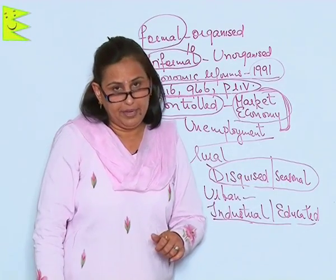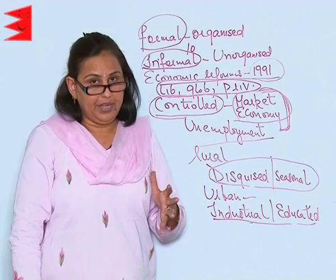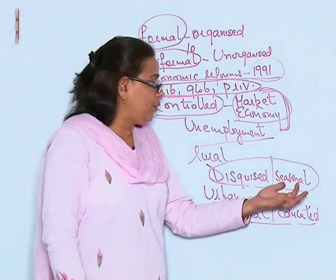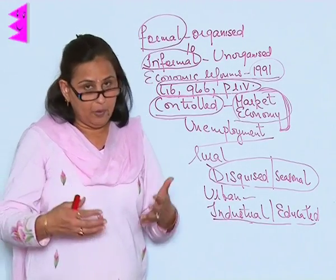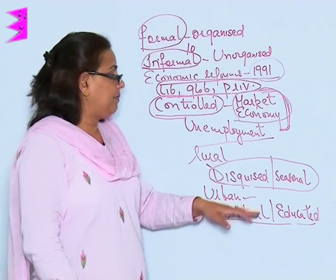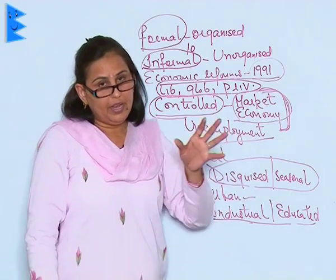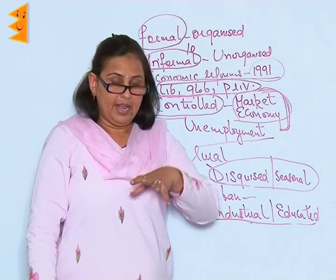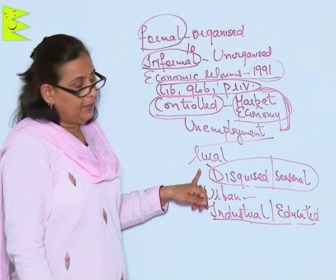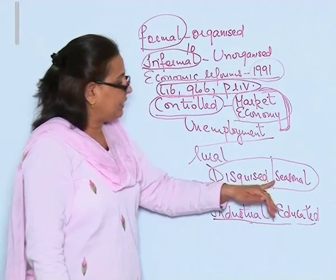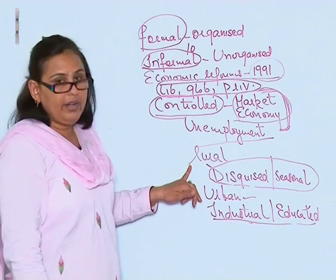Seasonal unemployment exists because the main economic activity in rural areas is farming. Whenever there is a harvest, that is the time laborers are required. Seasonally they are needed, and when there is no activity in the farms they are left unemployed. So disguised and seasonal unemployment are the features of rural unemployment.